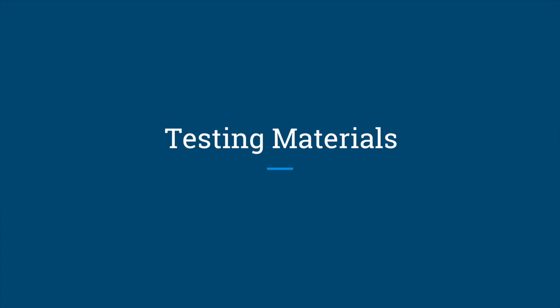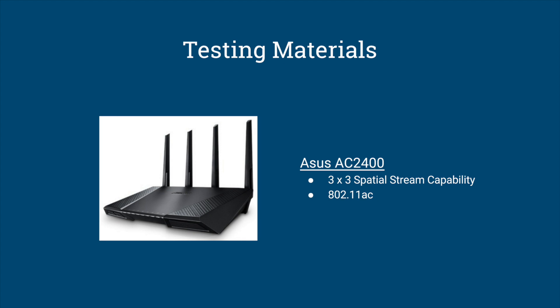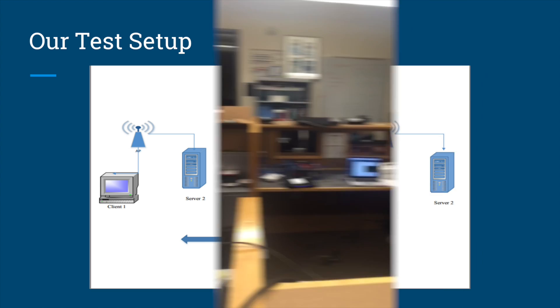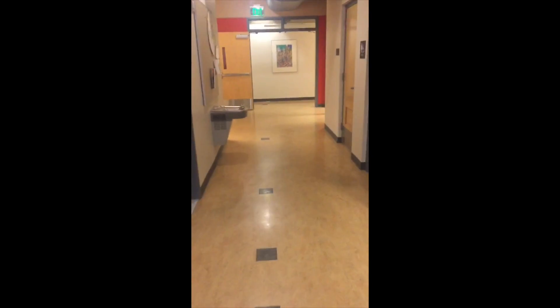To test the effect that co-channel interference has on throughput, we configured two AC2400 access points on channels 1 and 6 in the 2.4 GHz band. The access points were approximately 50 feet away from each other with a negative 40 dBm overlap in signal strength.